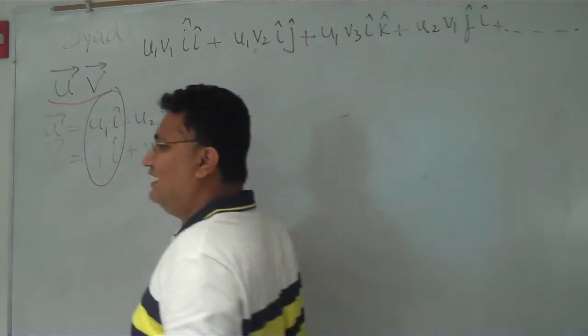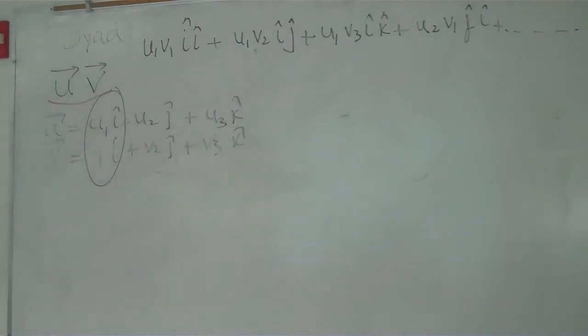You can check, there are nine components. If there are two directions in a tensor, it will have nine components. Simply calculation, three square. For one direction, we need i, j, k, three components. For two direction, we need three square.